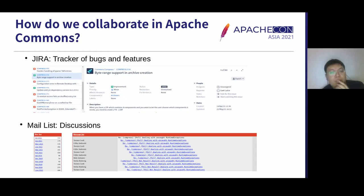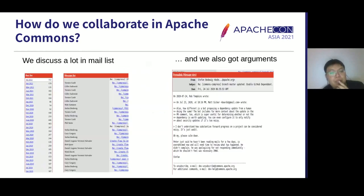First, we use JIRA as the bugs and features tracker, like many other Apache projects. We also discuss a lot on our mailing list — the number of emails on the list is amazing, especially considering this community has lasted over 20 years. We also have some arguments on our mailing list from time to time.